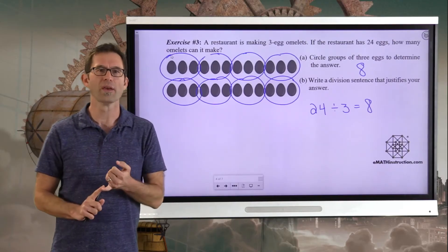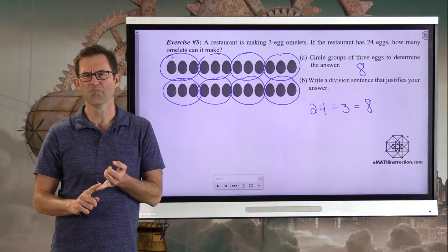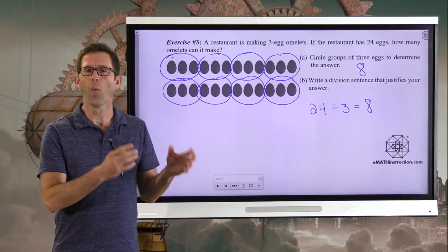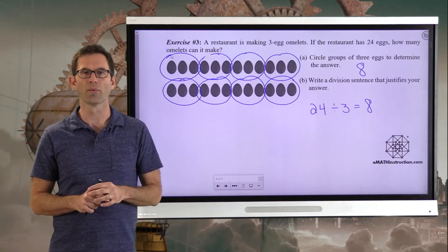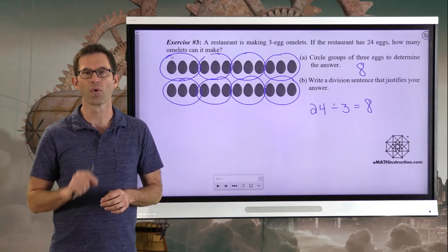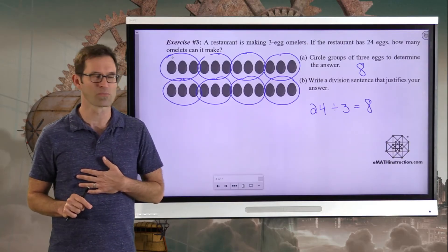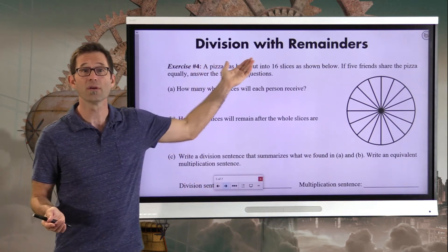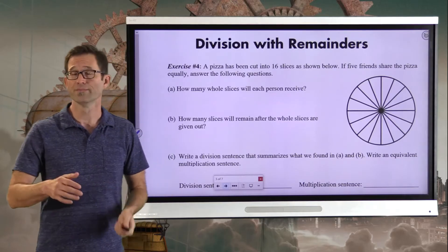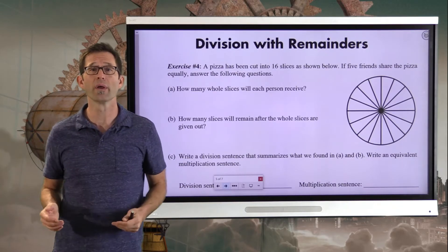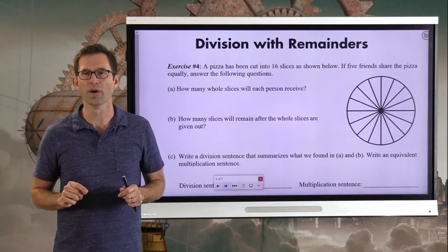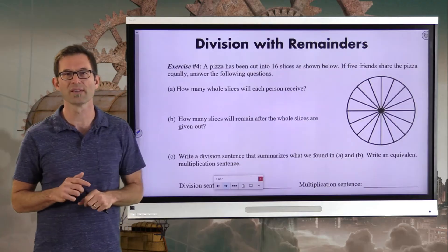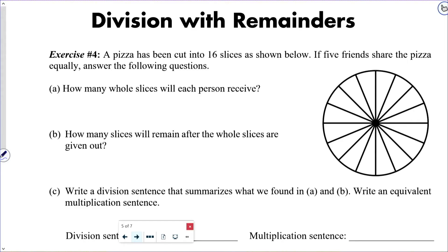Now, unlike multiplication of whole numbers, addition of whole numbers, and most of the time, subtraction of whole numbers, what results when you divide two whole numbers doesn't have to be another whole number. Let's take a look at that in the next problem. But hey, it's a problem about pizza. Division with remainders. So often when we divide two numbers, 24 divided by three, we get a whole number, eight. But sometimes we don't. And let's take a look at a classic situation. Exercise number four. A pizza has been cut into 16 slices as shown below. If five friends share the pizza equally, answer the following questions.